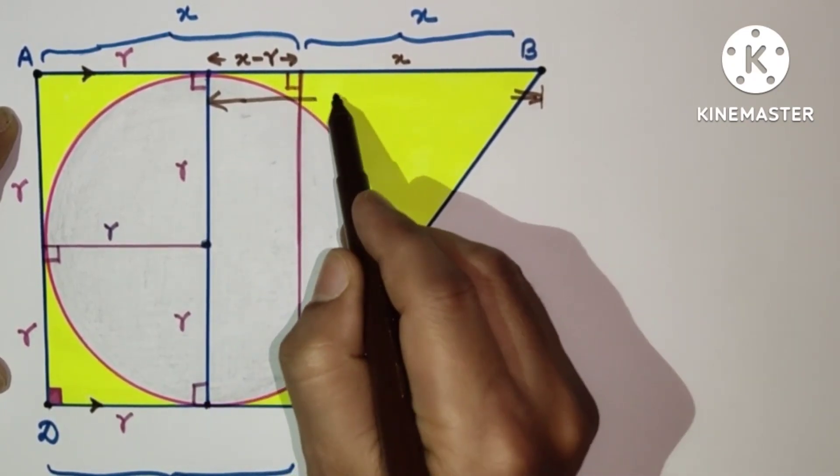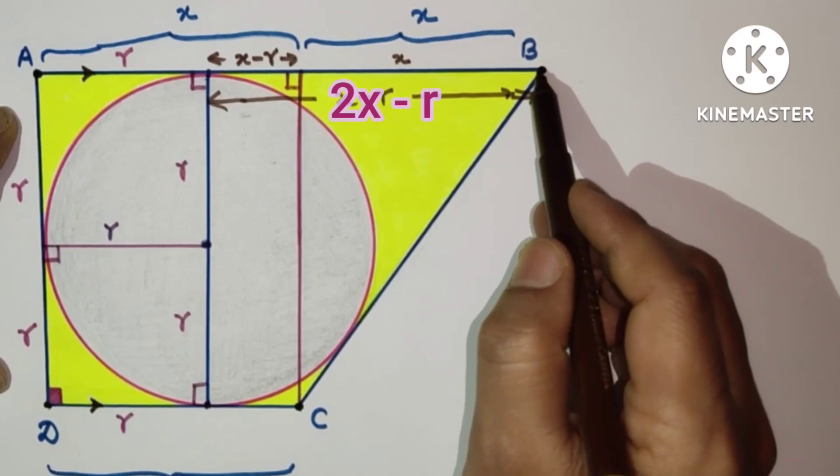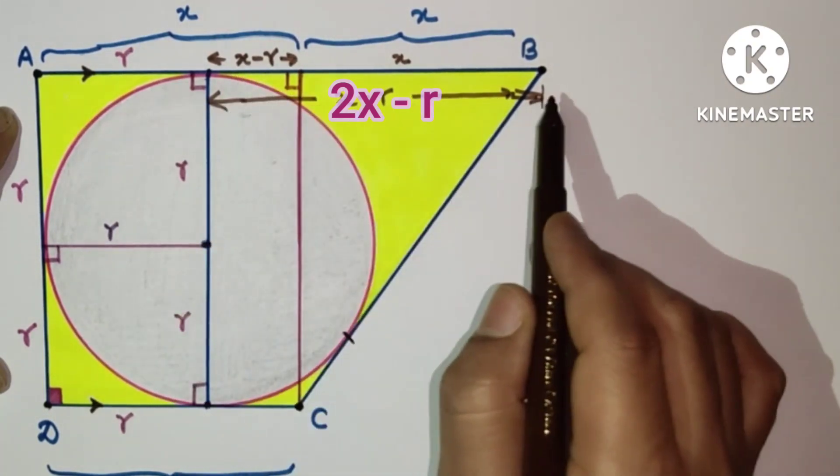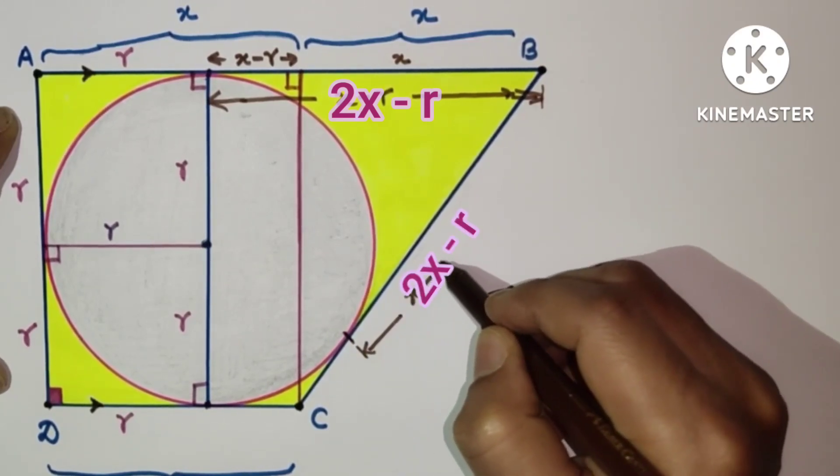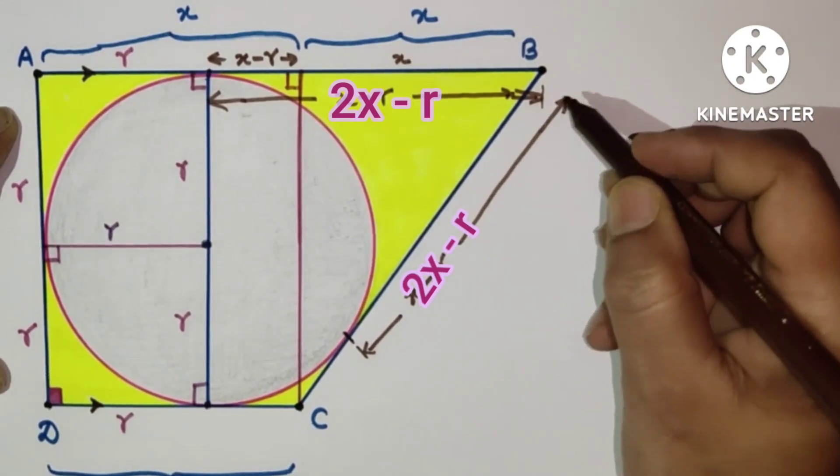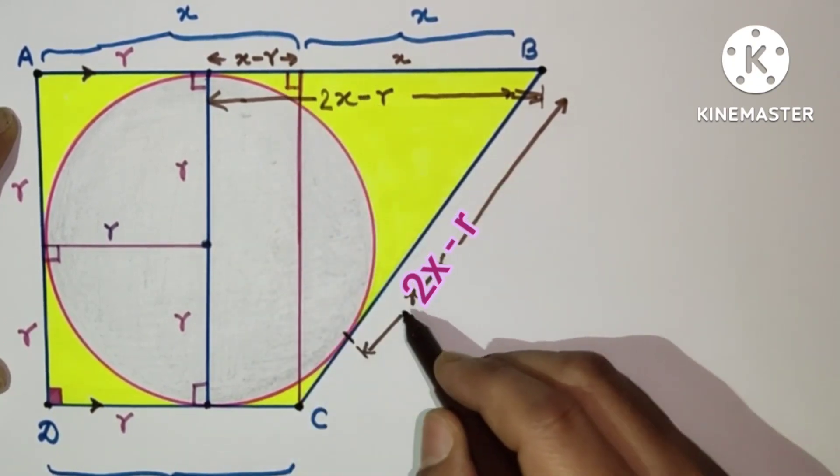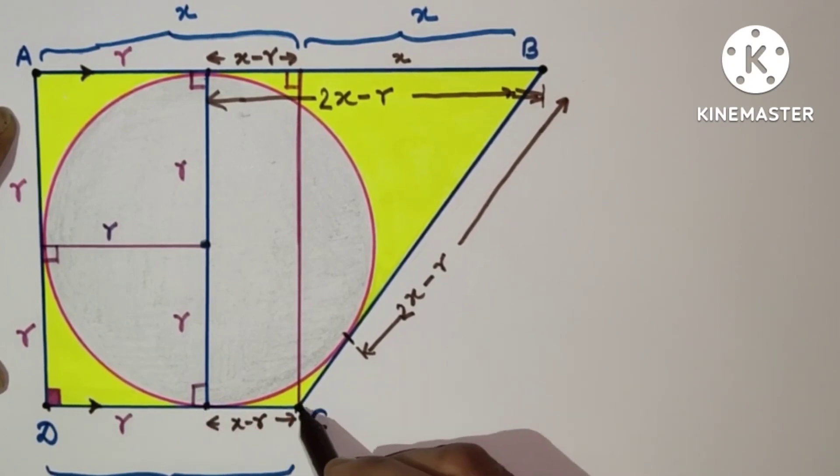X plus X minus R is equal to X minus R. As we know that from exterior point tangent lengths will be equal, so this length will be equal to this length. So from here to here it is X minus R, so from here to here this will also be X minus R. This is X minus R, this is X. Sorry, this will be 2X minus R, so this is 2X minus R. And from here to here it is X, this is R, this is X minus R. And if this is X minus R, this will also be X minus R, exterior point and 2 tangents are equal.